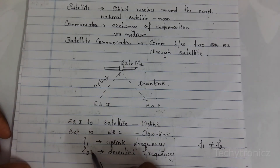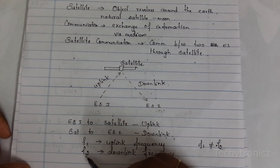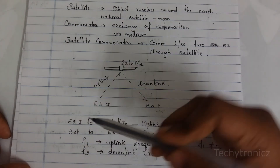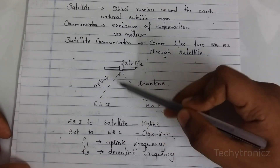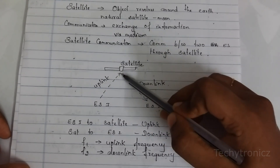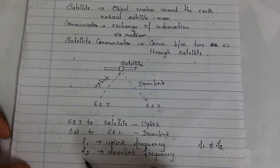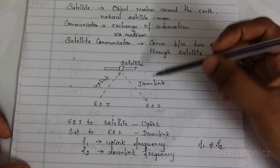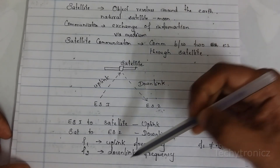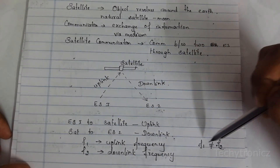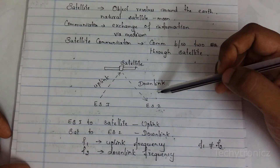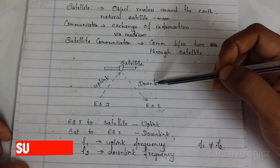Consider F1 as the uplink frequency — that is the frequency used while the earth station sends the signal to the satellite. That is uplink, using uplink frequency. Consider F2 as downlink frequency — that is when the signal is transmitted from satellite to earth station. That is downlink frequency. Both frequencies will not be the same while transmitting and receiving the signal.